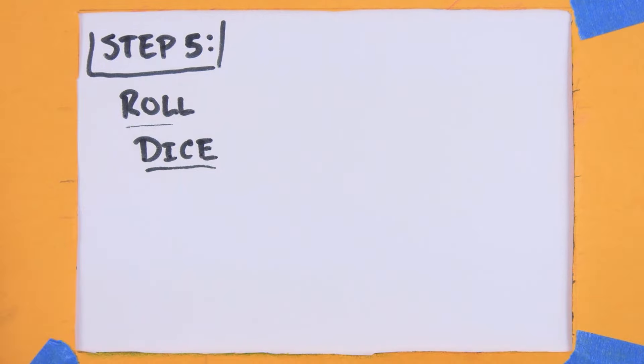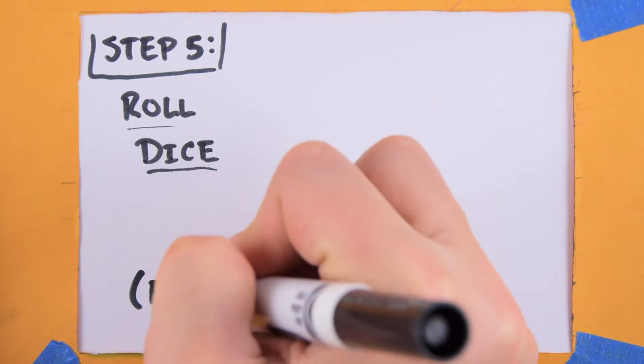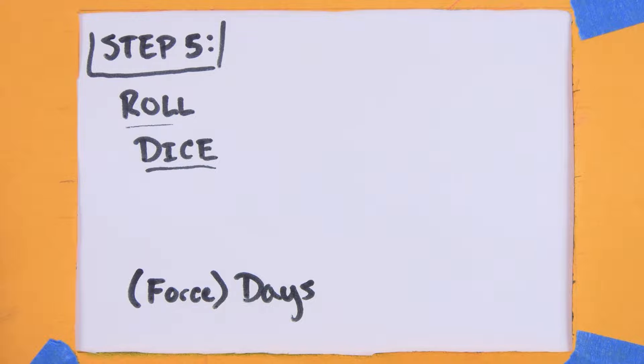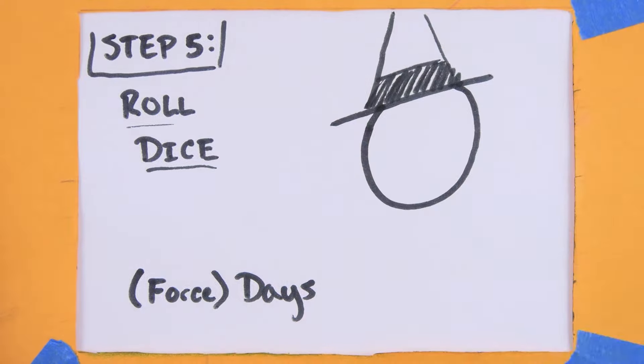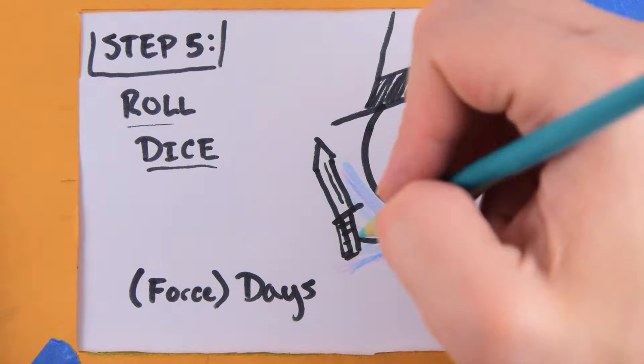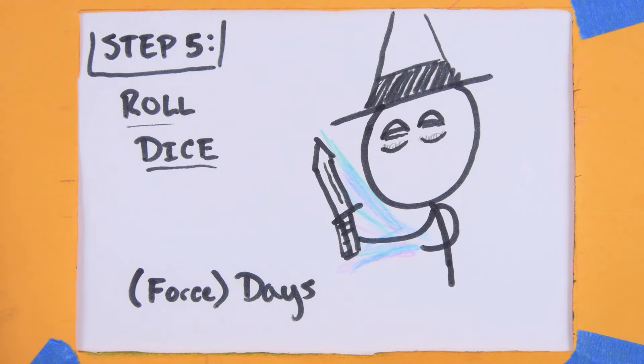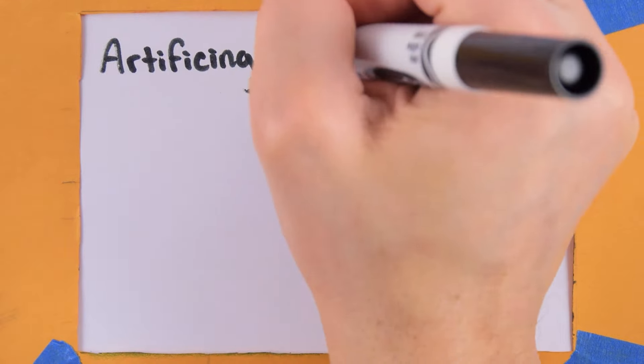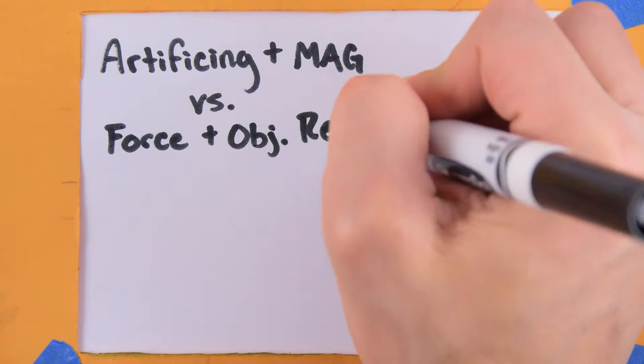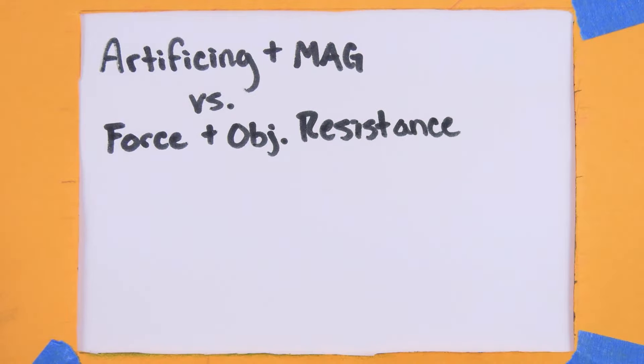Step 5: Roll the bones. Over the course of force days, you're going to be busy creating the enchantment. I must remind you that during this time you may not leave your magical lodge or the enchantment automatically fails. Roll your artificing plus magic against a number of dice equal to the focus's force, plus the talismah's object resistance.